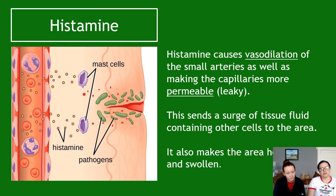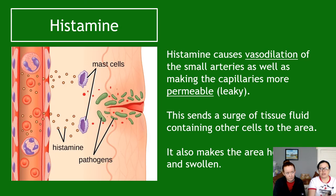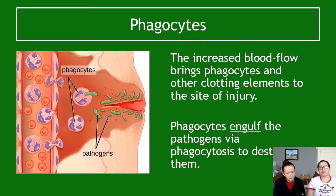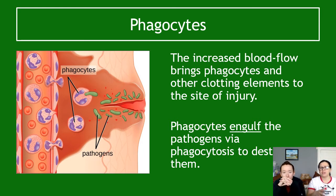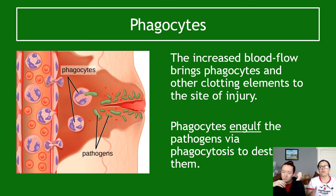You can counteract histamine's effect by using an antihistamine. For example, if you get an insect or midge bite, you apply an antihistamine, which reduces the inflammation reaction so it doesn't become as hot, swollen, and itchy. Phagocytes are the next cells to arrive. Because the capillaries are more permeable, these larger cells can leak out of the blood from the plasma into the tissue fluid, and phagocytes and other clotting elements arrive at the site of injury.